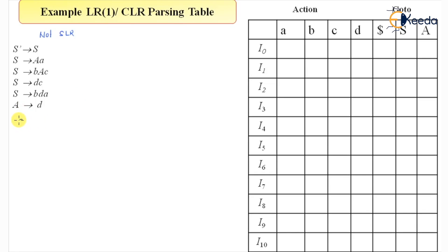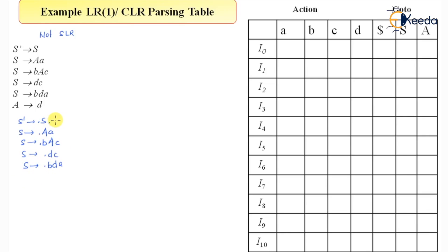Let's start creating the collection: S-derived dot S and S-derived dot small capital A small a. S-derived B A C dot, S-derived dot D C, S-derived dot B D A. Now we are putting a dot and we'll put a dollar here — after S nothing is there and no other condition, so we'll put dollar in this case. The last is A-derived dot D, included from this place; after A the symbol here is A. This will be my first state i0.